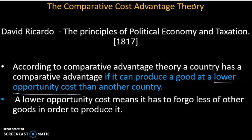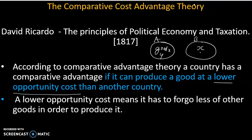There are two countries — Country A and Country B. These two countries produce the same commodities. We have two goods: Good X and Good Y. Country B produces Good X and Good Y.